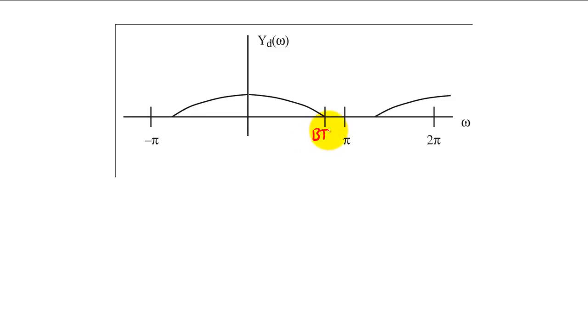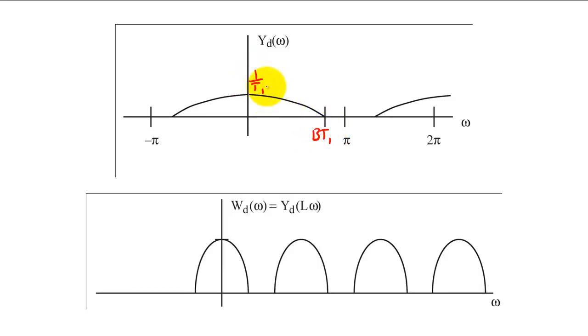If we add these zero samples into Y, we squish the frequency axis of the DTFT of Y by a factor of L. Since we are not adding energy to the signal, we do not scale the magnitude of the DTFT.